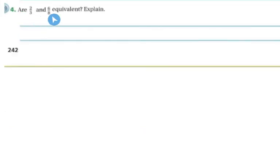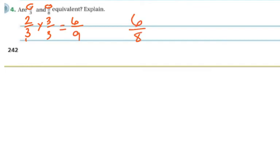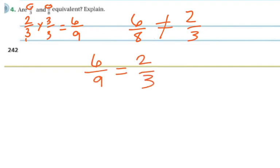Are 2/3 and 6/8 equivalent? Well, with 2/3, if I multiply the top and the bottom by 3: 2 times 3 is 6 — that gives me the 6 on top. But 3 times 3 is 9, not 8. So 6/8 is not equivalent to 2/3. Let me fix that so you can see: 6/8 is NOT equivalent to 2/3. However, 6/9 IS equivalent to 2/3. I looked at 2 and 6 and saw that 2 times 3 equals 6, but if I multiply the top by 3, I also have to multiply the bottom by 3 — and that gives 9, not 8.